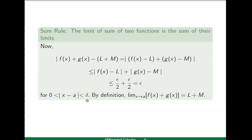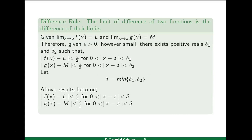We have proved that |f(x)+g(x)−(l+m)| is less than epsilon for zero less than |x−a| less than delta. Therefore, by the epsilon-delta definition of limit, limit x approaches to a of f(x)+g(x) equals l+m. This proves the sum rule.